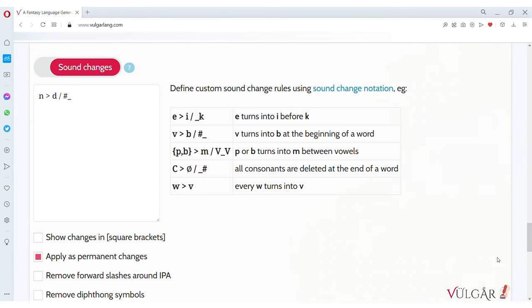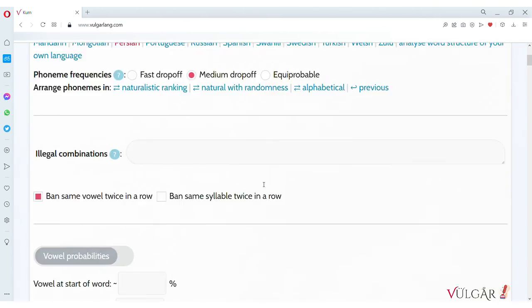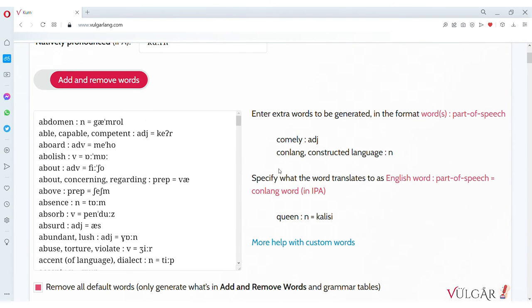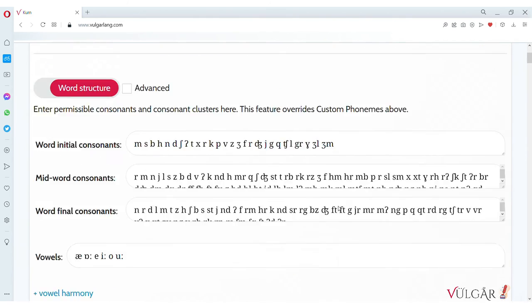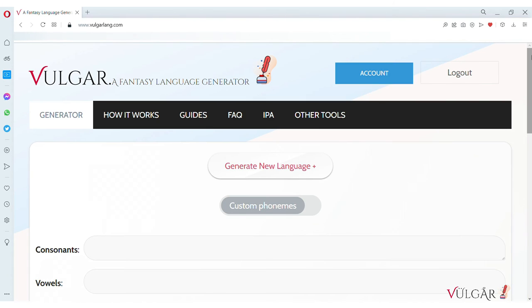Checking apply as permanent changes applies the changes to the hard coded input in add and remove words. The rules then disappear as they are no longer needed. This process can be used to evolve the pronunciation of the language over multiple generations.